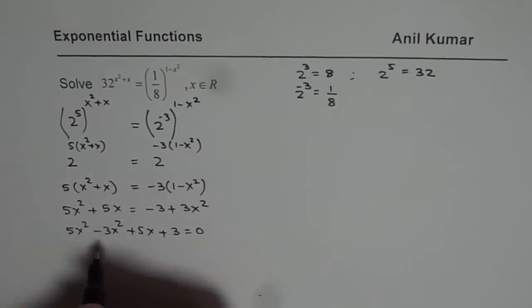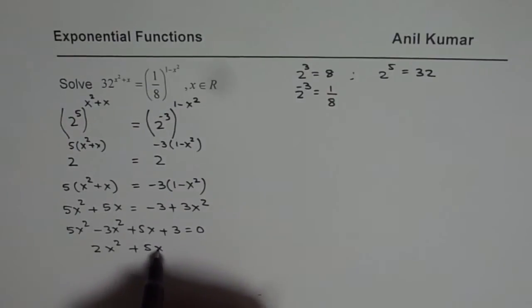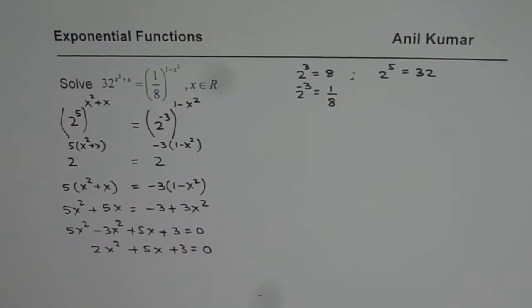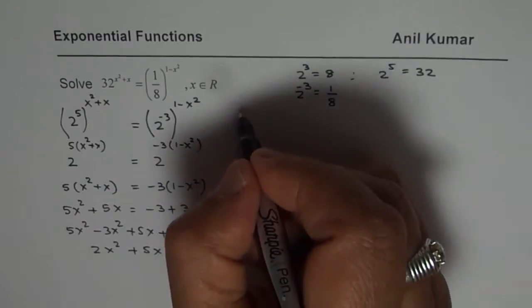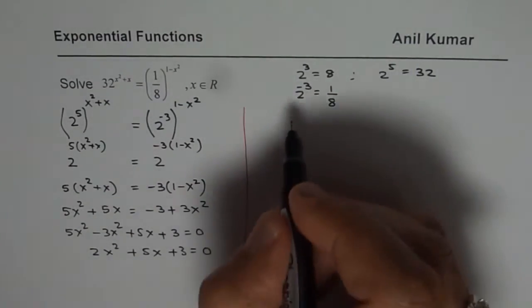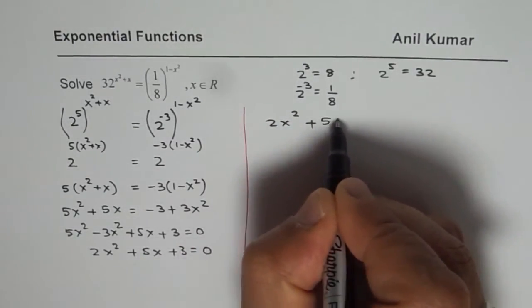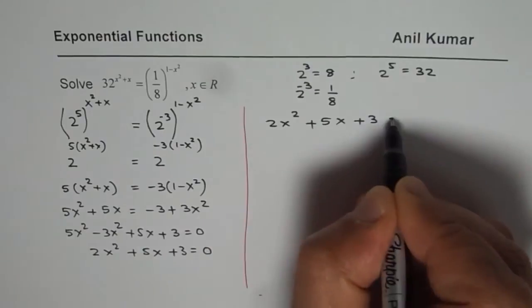So combining these terms we get 2x square plus 5x plus 3 equals to 0. So let us solve this equation on the right side. So we have a quadratic equation to solve which is 2x square plus 5x plus 3 equals to 0.